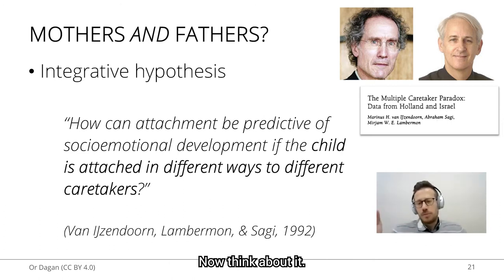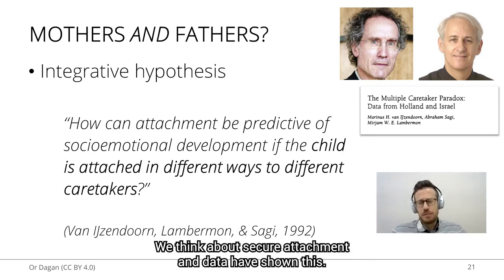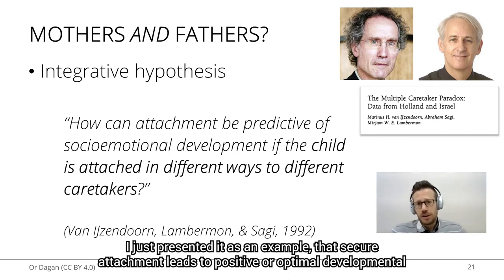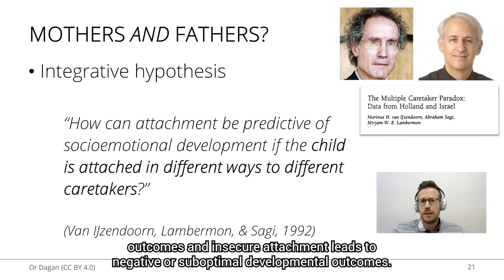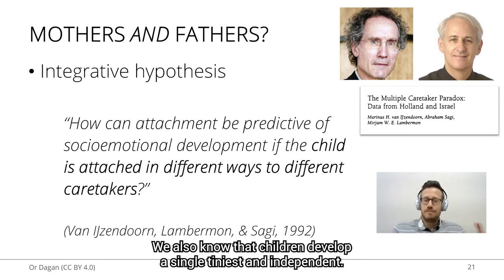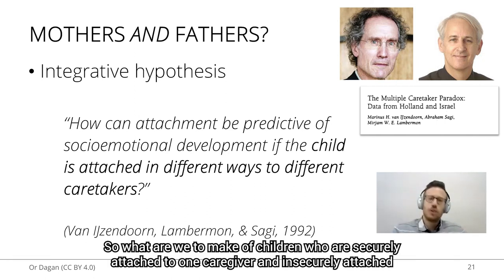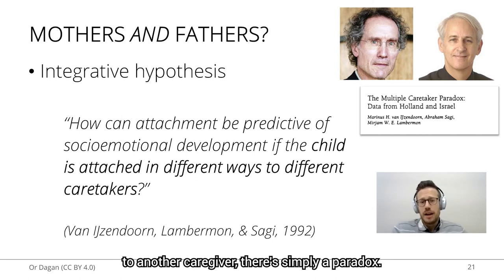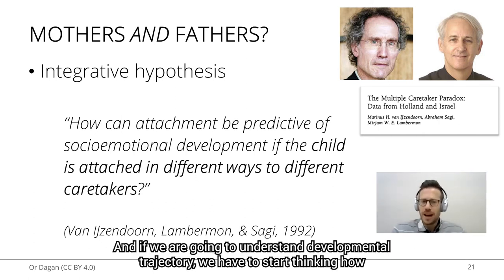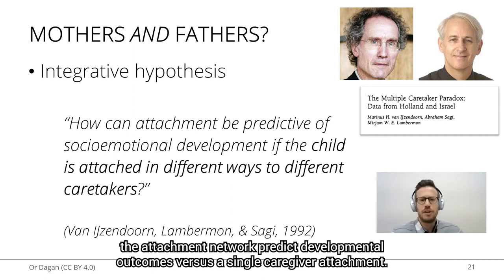We think about secure attachment — data have shown that secure attachment leads to positive or optimal developmental outcomes, and insecure attachment leads to negative or suboptimal developmental outcomes. We also know that children develop simultaneously and independently attachment patterns to multiple caregivers: mothers, fathers, and others. So what are we to make of children who are securely attached to one caregiver and insecurely attached to another? This is simply a paradox, and if we are to understand developmental trajectories, we have to start thinking about how the attachment network predicts developmental outcomes versus a single caregiver attachment.